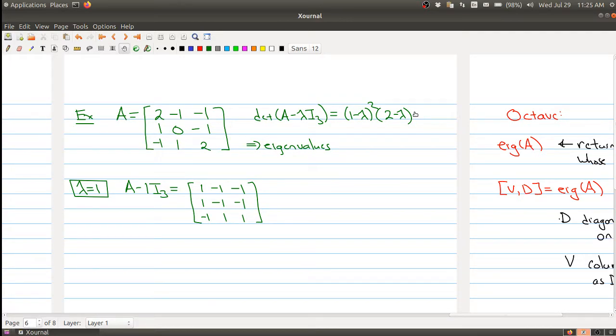Because I've given you the characteristic polynomial and it has a particularly nice form, I can write out what the eigenvalues are: lambda equals 1 with multiplicity 2, and lambda equals 2 with multiplicity 1.